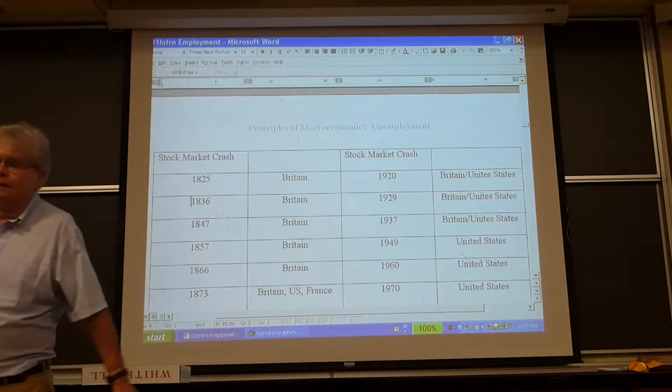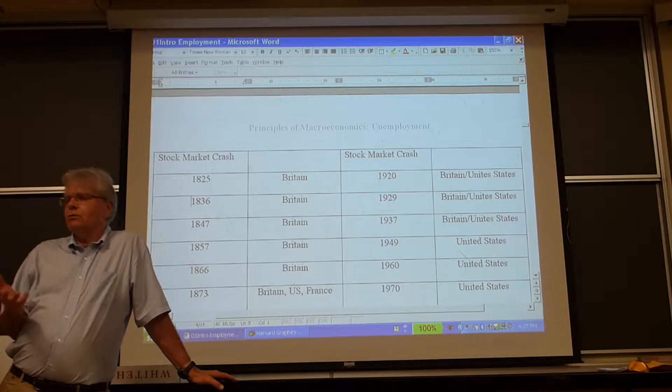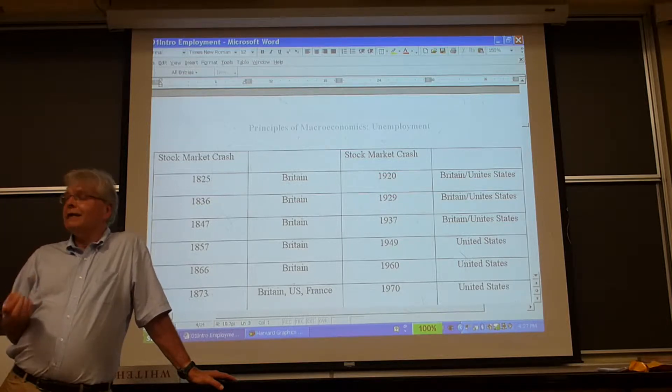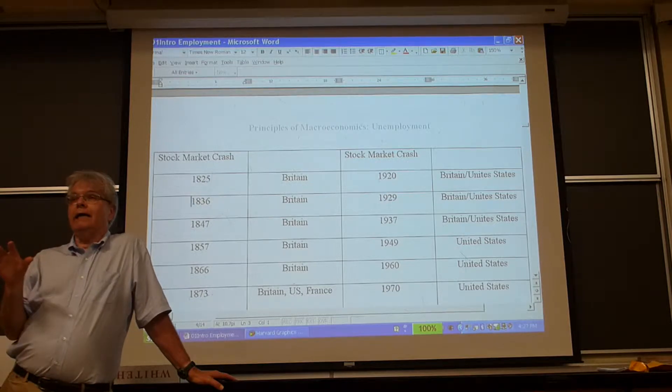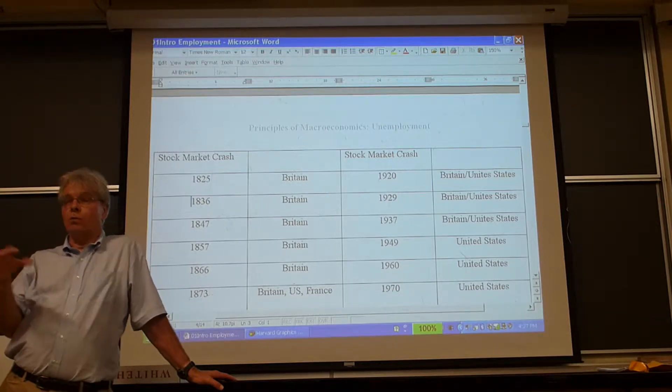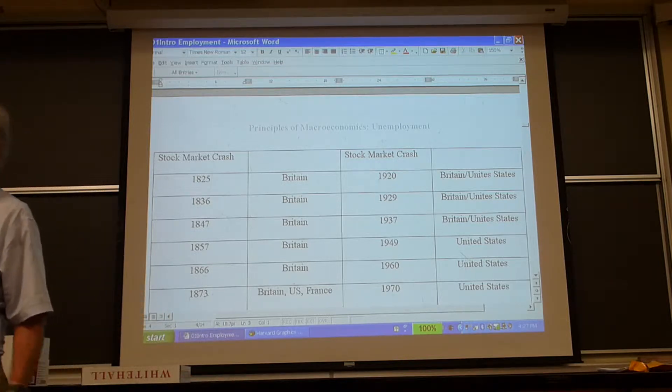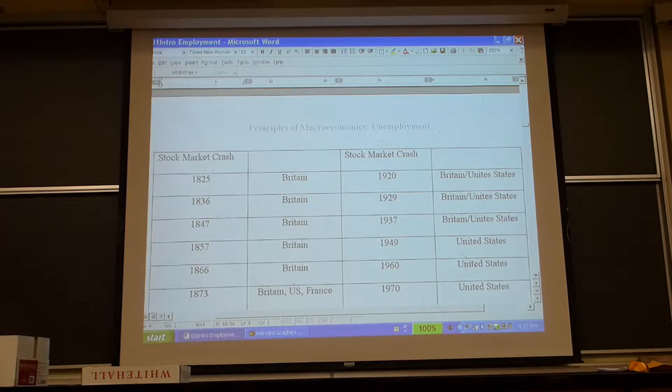I'm just looking at the spectacular stock market crashes that ushered in a period of huge unemployment, rising unemployment, bankruptcy of firms, falling prices, etc. These are the dates of the spectacular stock market crashes. This is in Britain, because Britain is the only relevant one before 1873. 1825, 36, 47, 57, 66. You can see there's 11, there's 11, there's 10, there's 9.